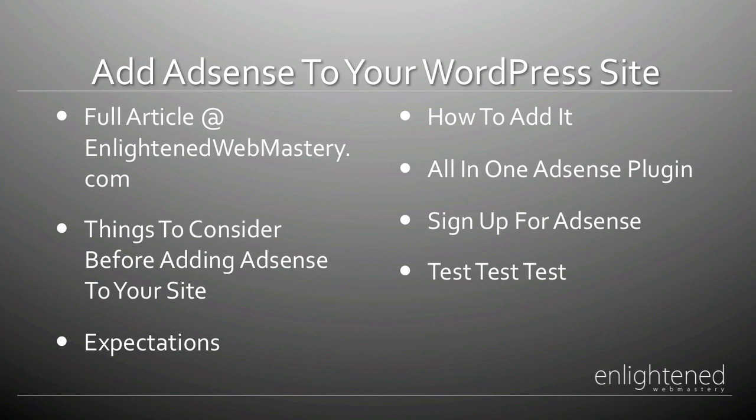To do that, you're going to want to add the All-in-One AdSense plugin. I have the link on my website at enlightenedwebmastery.com, or you can Google the name. After you have the plugin, install it and activate it, then you need to put in your AdSense publisher ID. If you don't have one, you need to sign up for an AdSense account — you'll need to be approved before you start earning money or before ads start showing. To sign up, just go to google.com/adsense.